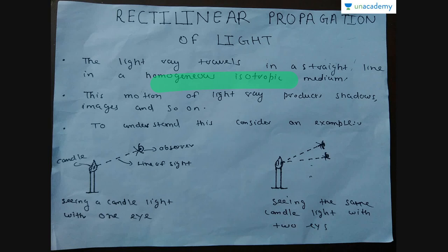We will discuss only rectilinear propagation of light and deal only with straight line motion of light in this whole course. This motion of light produces shadows, images, and so on.